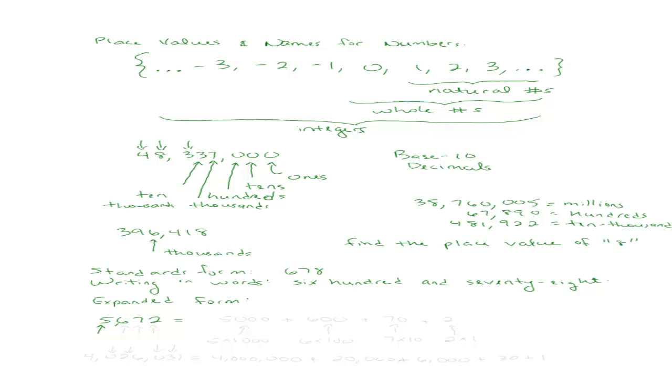So if I wanted to write, for example, the number 5672 in expanded form, what I'm going to do is I'm going to take each digit and give it its place value. So let's start with the digit 5. The digit 5 is in the thousands place value. So I'm going to call this 5,000. The digit 6 is in the hundreds place value. So I'm going to add 600. The digit 7 is in the tens place value. So I'm just going to add 70. The digit 2 is in the ones place value. So that's just going to be 2.